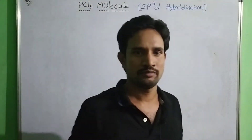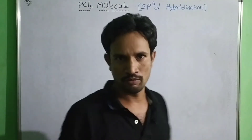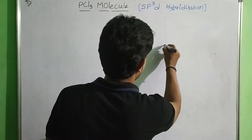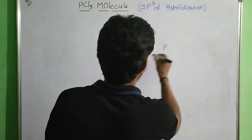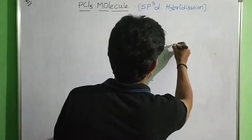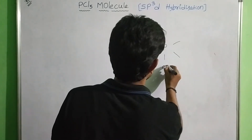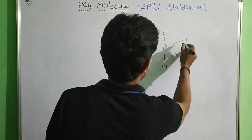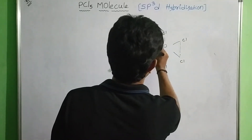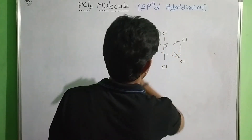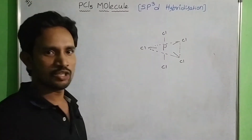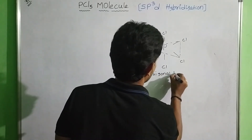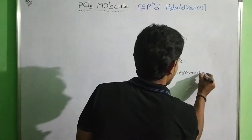First of all, we have to learn what is the structure of PCL5. The structure of PCL5 is: P is the central atom, and these are 5 chlorine atoms. It is the shape of trigonal bipyramidal.